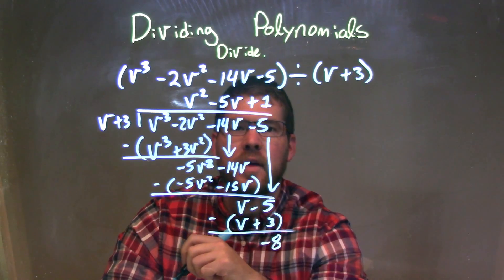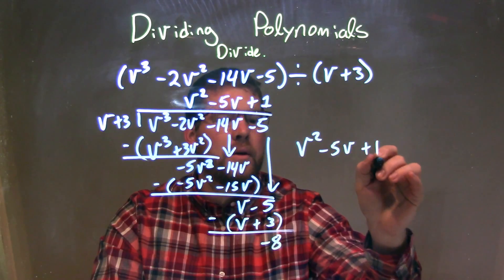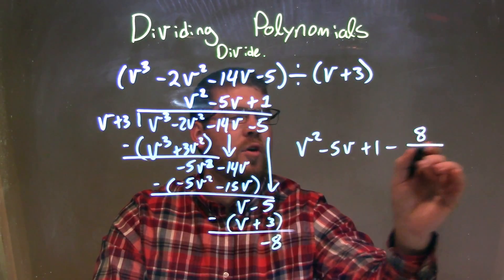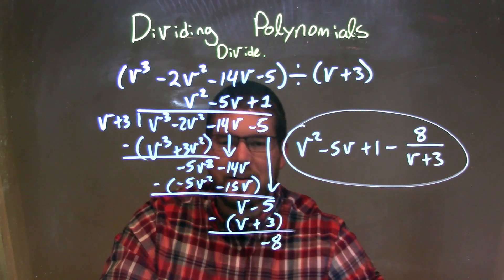So that is our remainder, that -8. So my final answer here is v² - 5v + 1 - 8 over my remainder, which is v + 3. And that is the final answer.